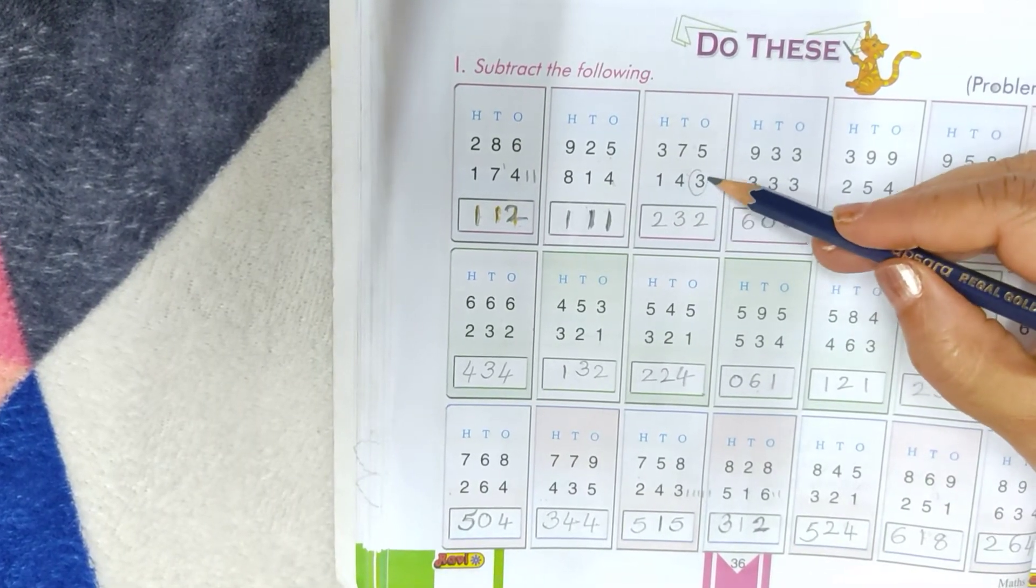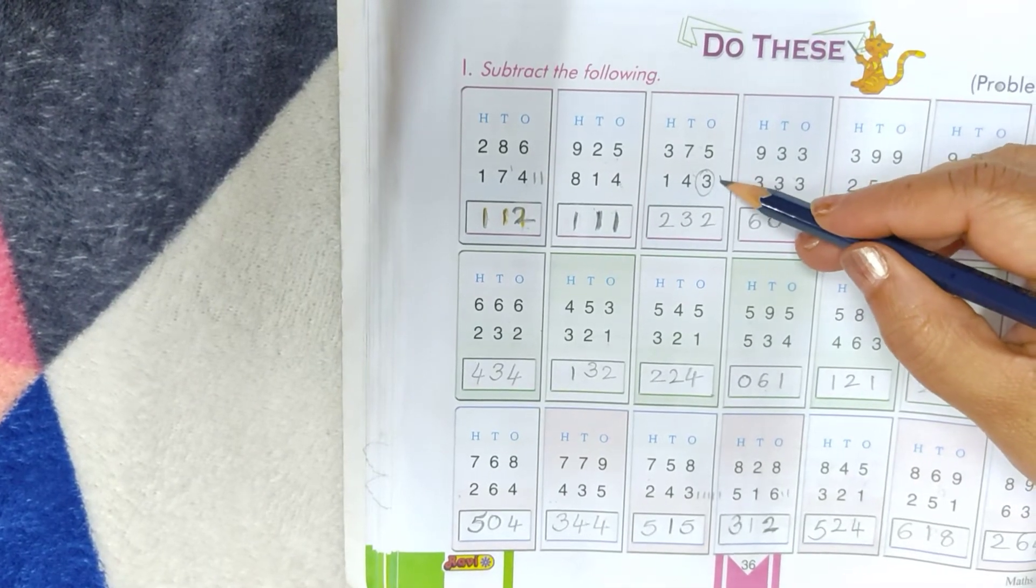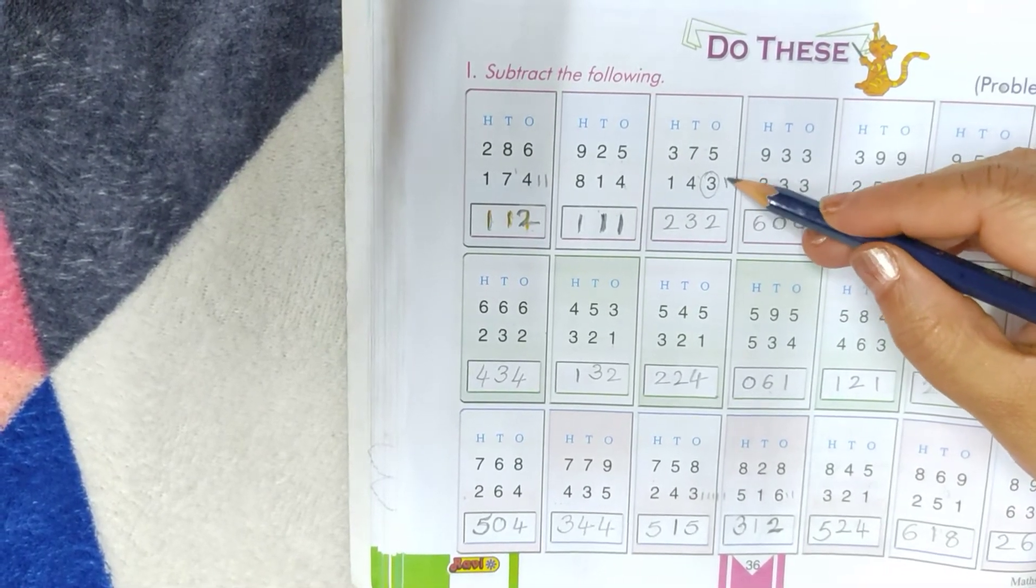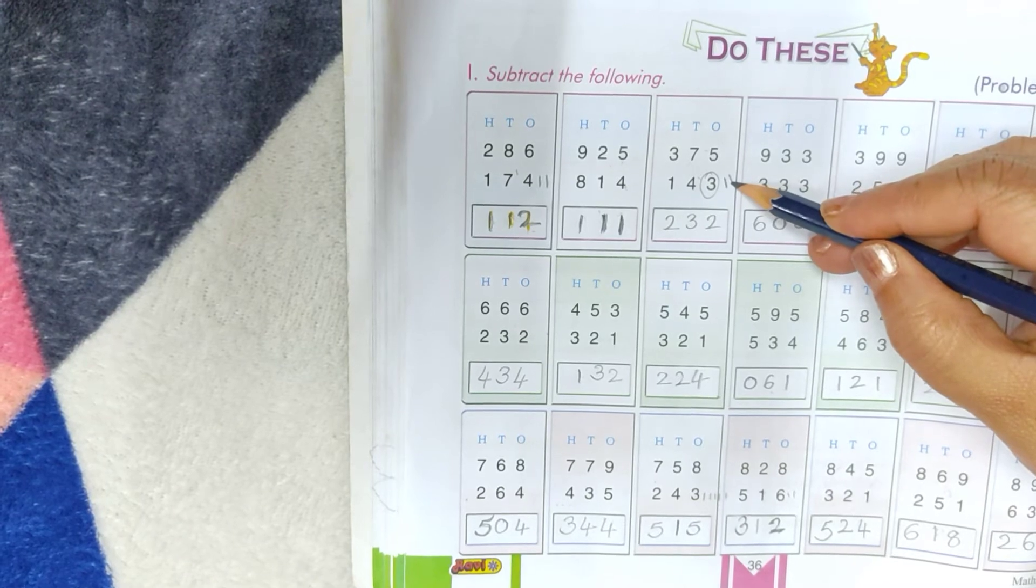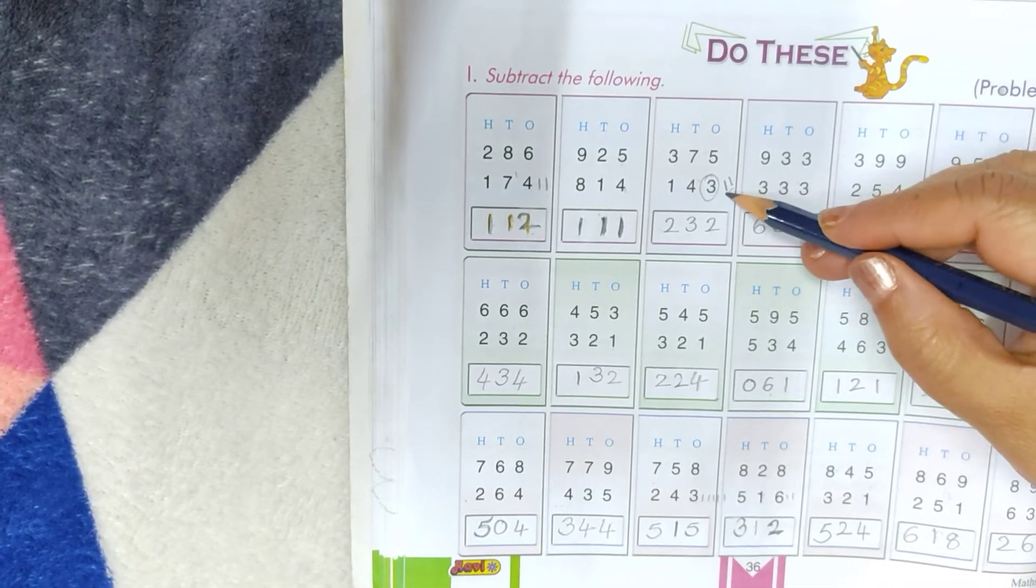See here. Take this number 3. After 3, count after 3. 1, 2, 3, 4. Sorry, 3, 4, 5. So 2 lines are. Then put here 2 under 1's place.